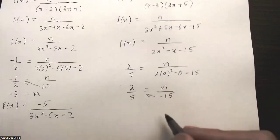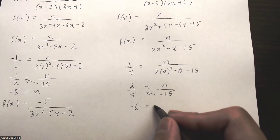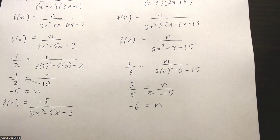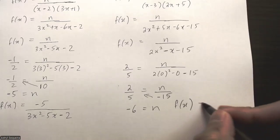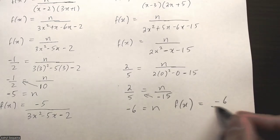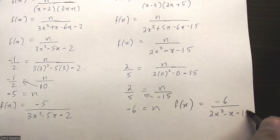Then I'll cross multiply the negative 15 to the other side, so I'll just get negative 6 equals n. And finally we can rewrite our equation: f(x) equals negative 6 over 2x squared minus x minus 15.